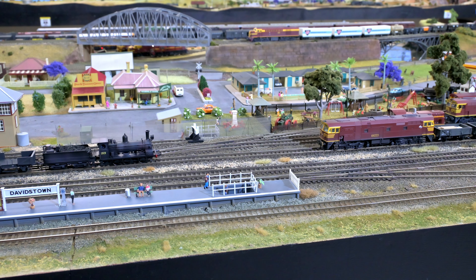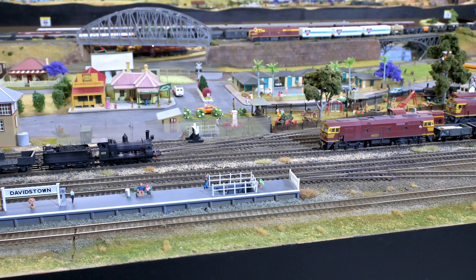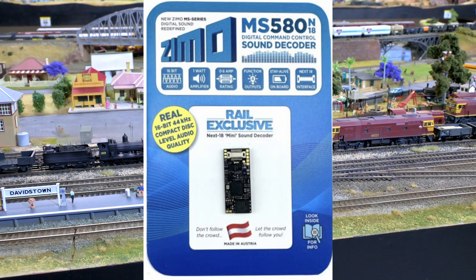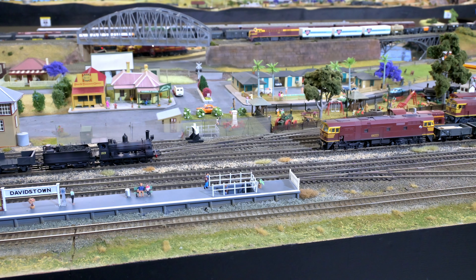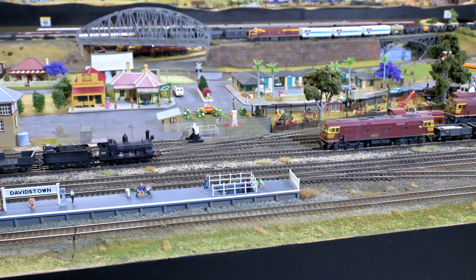Today as we said we're going to talk about DCC and DCC basics. On the left you can see a steam engine sitting on the track and a diesel engine on the right. The model train hobby is split into two camps: DC, which means direct current, and DCC, which means digital command control. With DC, all of your locomotives are controlled by applying a variable voltage to the track, and a simple rheostat-based controller will vary the voltage to make the train go faster and slower.